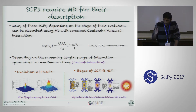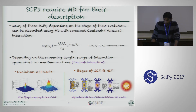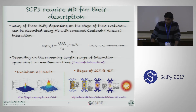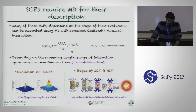As the screening length varies, if the screening length is extremely large, this term goes to one, recovering the Coulomb interaction. If the screening length is small, we get a short-range interaction. There are intermediate values for the screening length where the interaction becomes medium range. So depending on the stage of evolution, the range of interaction spans from short to medium to long range — and this has been studied well for the evolution of ultra-cold plasmas or the different stages of ICF experiments.